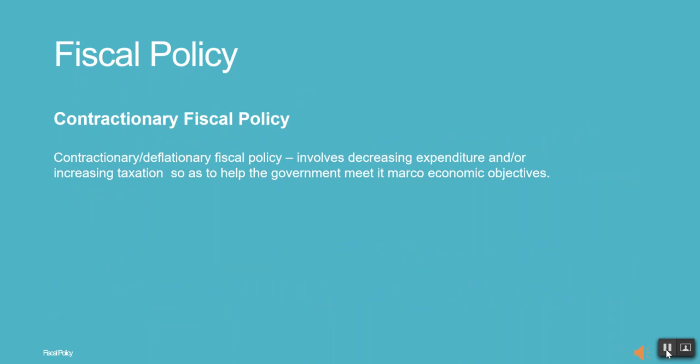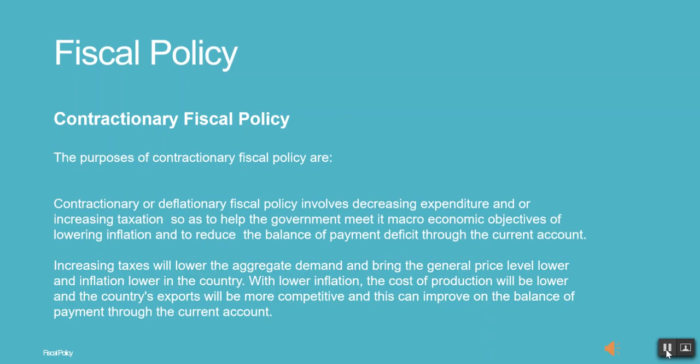Sixth, Contractionary or deflationary fiscal policy involves decreasing expenditure and/or increasing taxation so as to help the government meet its macroeconomic objectives of lowering inflation and reducing the balance of payments deficit through the current account. Increasing taxes will lower aggregate demand and bring the general price level and inflation lower. With lower inflation, costs of production will be lower and the country's exports will be more competitive, improving the balance of payments through the current account.